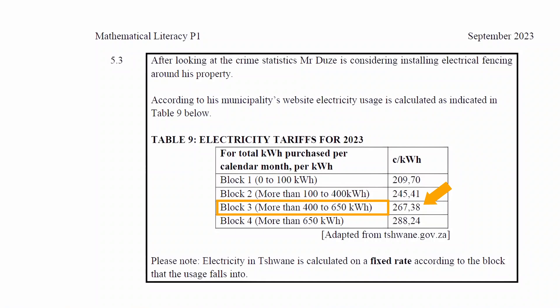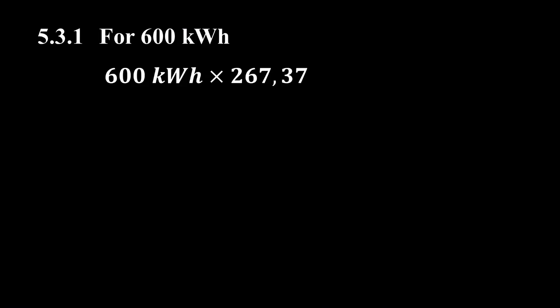So the cost of electricity will be 600 kilowatt hours multiplied by 267.38 cents per kilowatt hour, and this equals 160,428 cents.